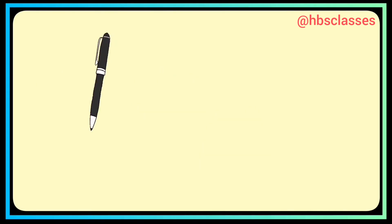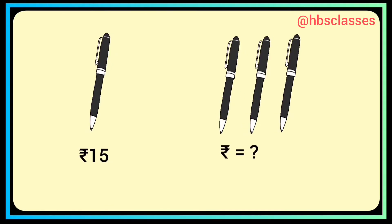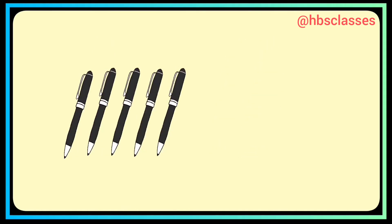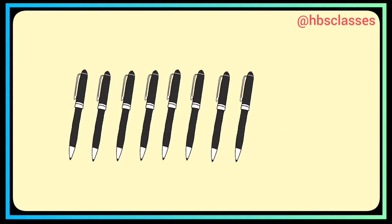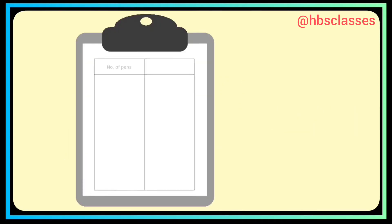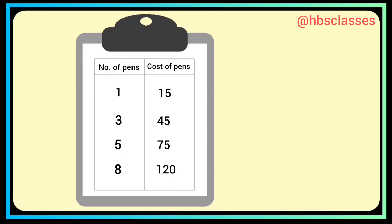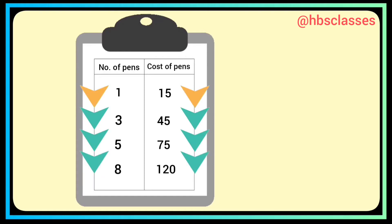Here we have a pen whose cost is rupees 15. The cost of three pens will be rupees 45, five pens would cost rupees 75, and eight pens would cost rupees 120. Let's write the number of pens and their cost in a table. We observe that as the number of pens increased, the cost also increased in the same manner.